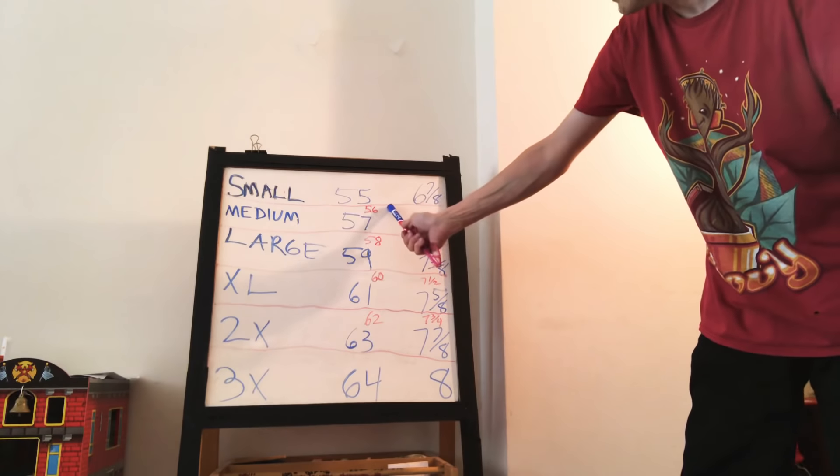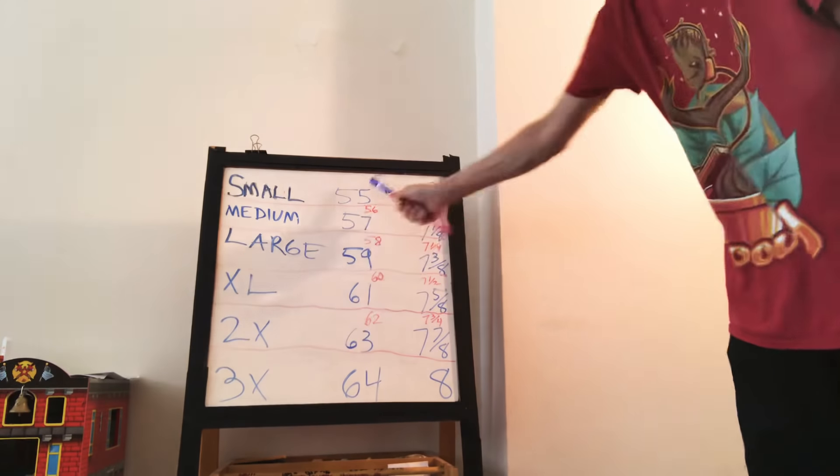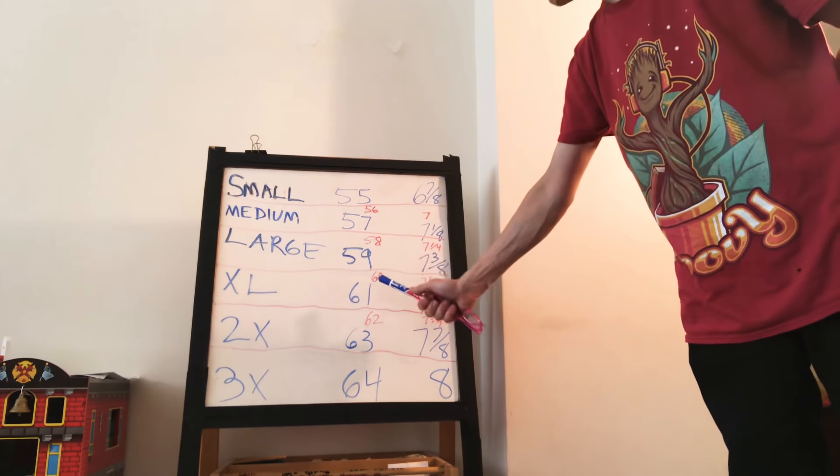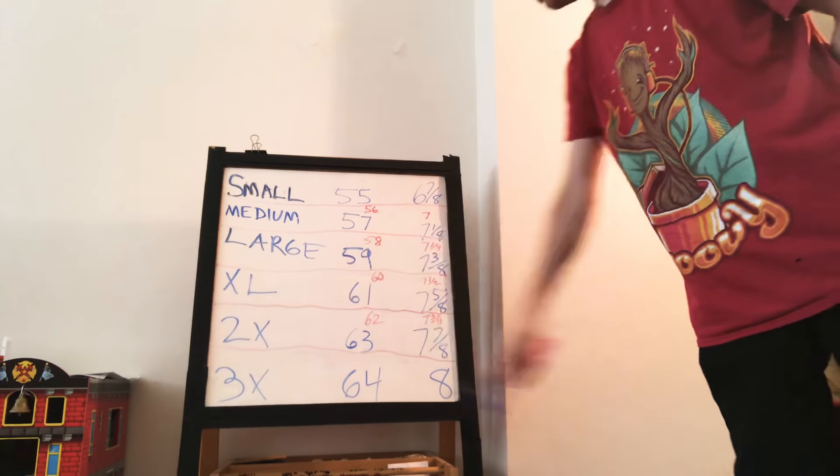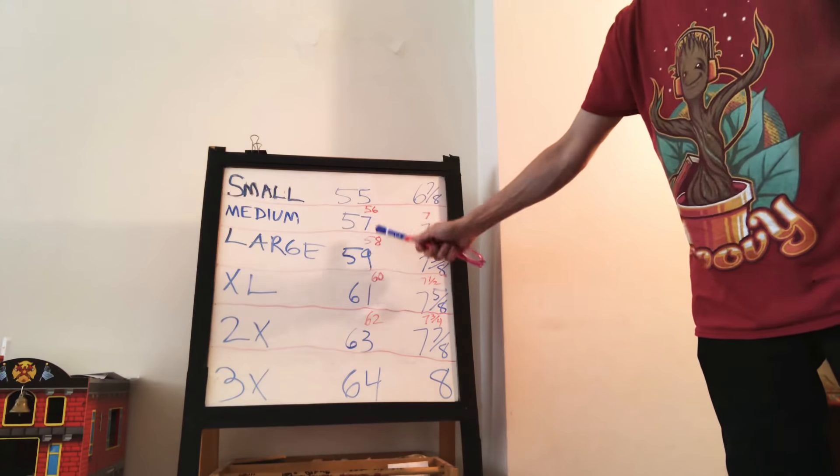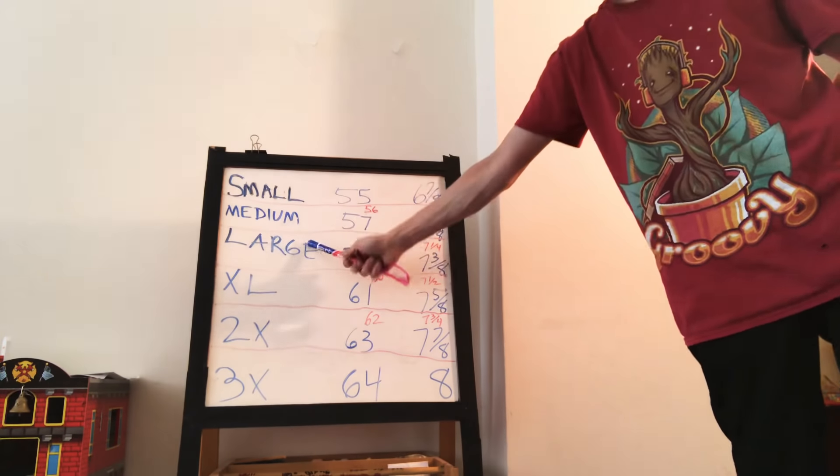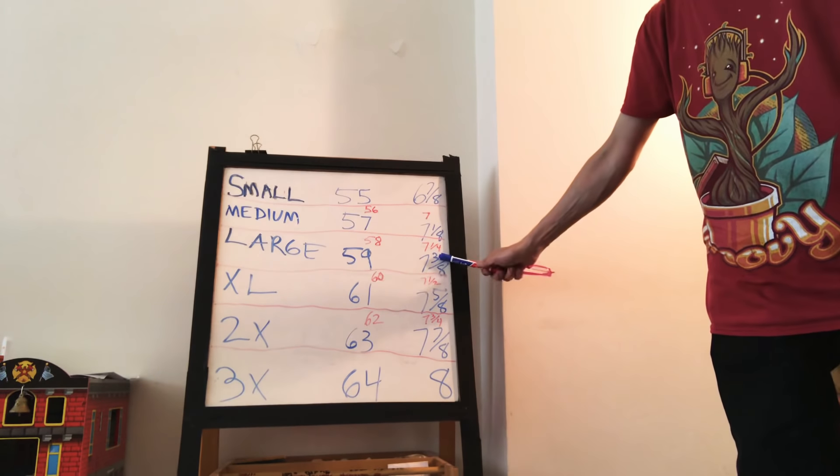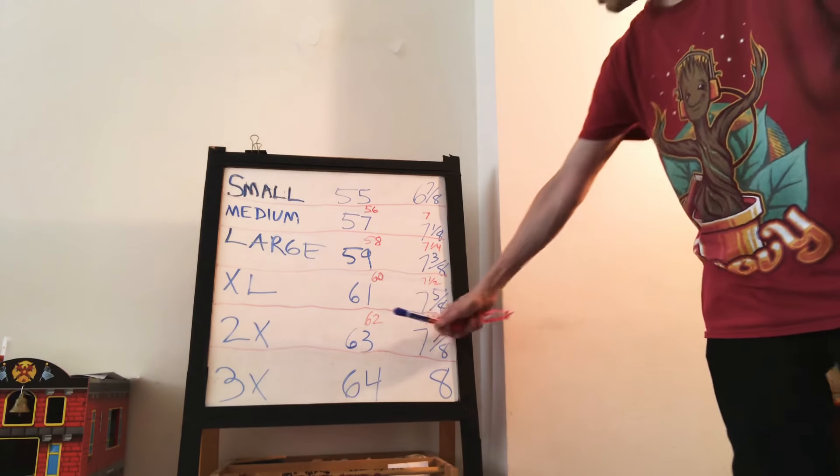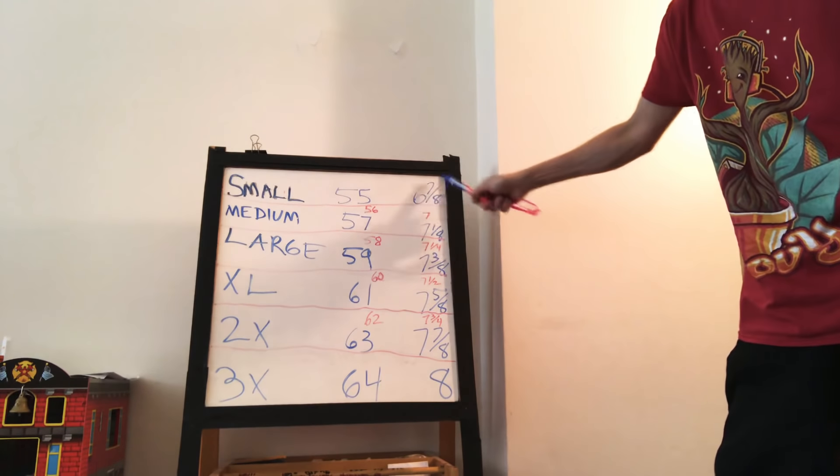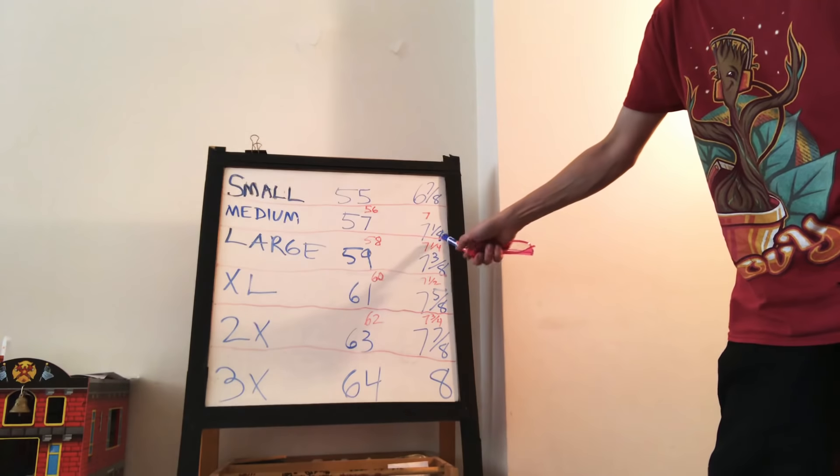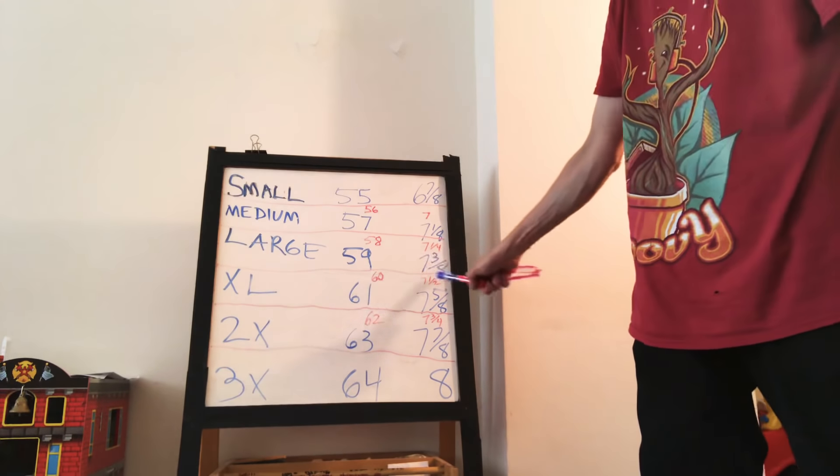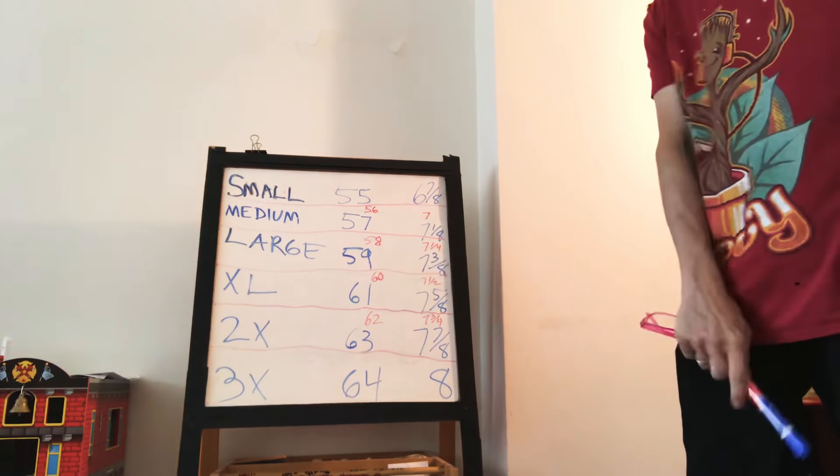But we're talking about these blue ones, the major sizes. 55, 57, 59, 61. Small, medium, large, extra large. 55, 57, 59, 61. Small, medium, large, XL. 6 7 8ths. 7 1 8ths. 7 3 8ths. 7 5 8ths. Look at them. Soak them in. That's a small 6 7 8ths. That's a medium 7 1 8th. That's a large 7 3 8ths. That's a typical size. 7 3 8ths. That's a large. It's Kevin's size.